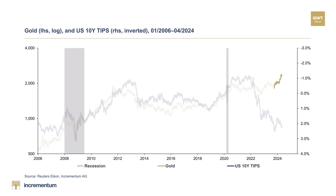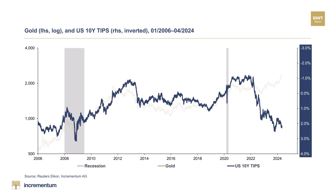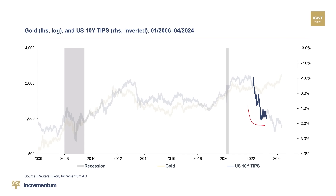In the past months, the gold price broke out to new all-time highs. What is remarkable is that this is happening in an environment in which, according to the previous playbook, the gold price should actually have fallen as real rates have actually been rising. Please note that the scale of the real rates on this graph is inverted in order to exhibit the correlation better, meaning a falling blue line indicates rising real rates.